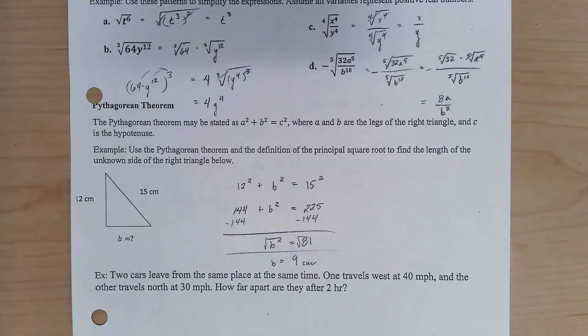And so this is a good demonstration of why we have the principle square root. Both so that we can force our square roots to be functions, where they only put out one value. And when I'm talking about lengths here, a negative length doesn't make any sense. So I have 9 centimeters.